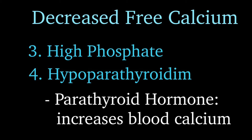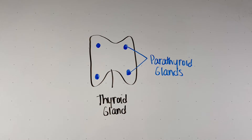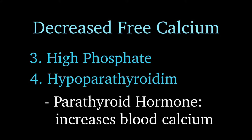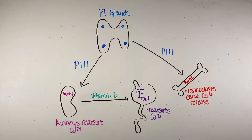Another cause of decreased calcium availability is removal of the parathyroid glands or hypoparathyroidism. The parathyroid glands are small endocrine glands located behind the thyroid, and they are super important in calcium regulation — their primary purpose is to secrete parathyroid hormone (PTH). PTH increases calcium levels in the blood: first, it goes to the bone and takes calcium out; second, it tells the kidneys to increase reabsorption of calcium; and third, it tells the kidneys to make the active form of vitamin D, which is important for calcium absorption from the GI tract.